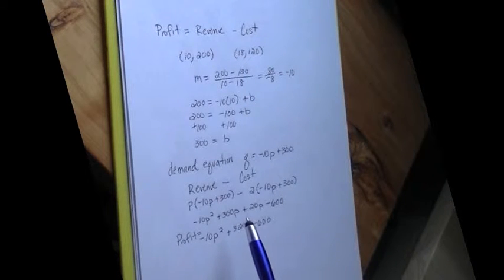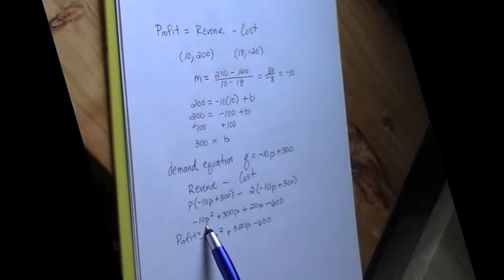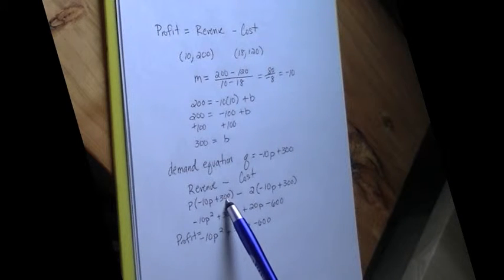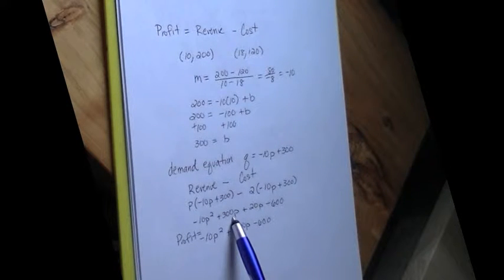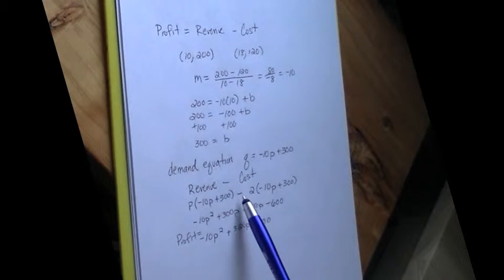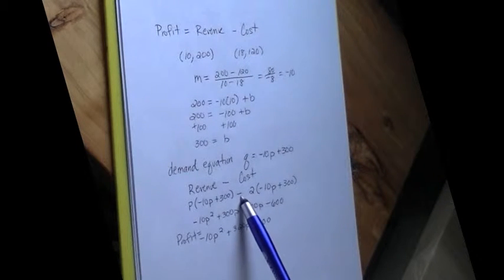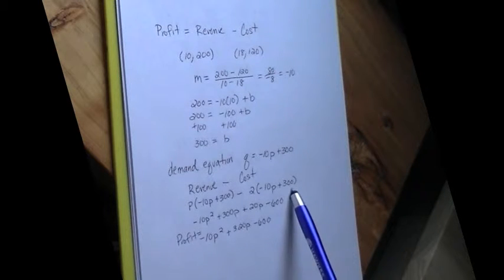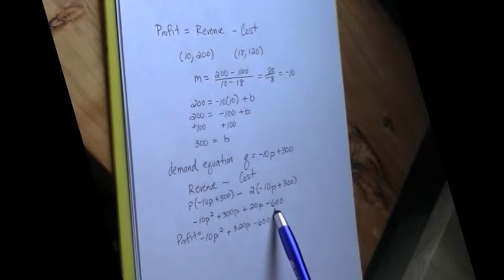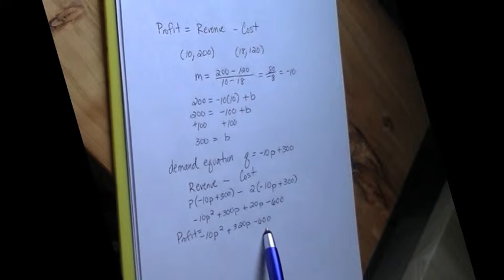That gives me my profit. Revenue minus cost is profit. So cleaning that up a little bit, P times negative 10P is negative 10P squared. P times 300 is 300P. Careful here, I'm subtracting and this first term is negative, so that will become positive 20P. And then distribute the negative to the 300. So negative 2 times 300 is negative 600. So my profit is negative 10P squared plus 320P minus 600.